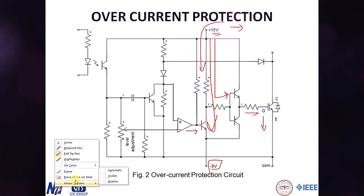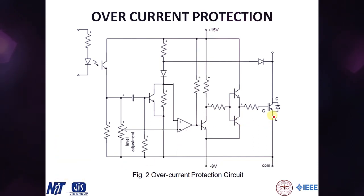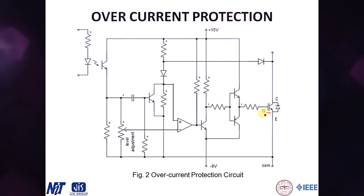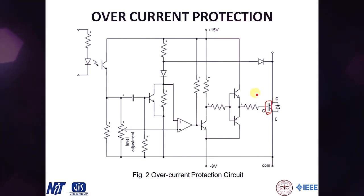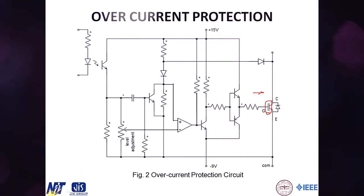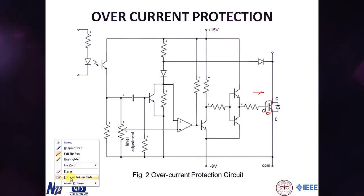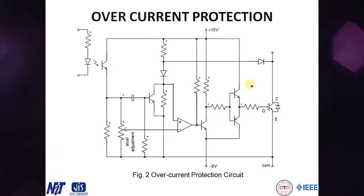However, simply diverting gate current isn't enough to stop the IGBT from conducting, because the IGBT has a gate capacitance that holds charge at the gate terminal. It is therefore important to fully discharge this gate capacitance so that no stray charge can turn the IGBT on again. To achieve this, we use a totem pole transistor configuration.